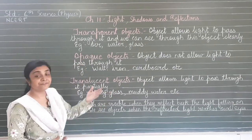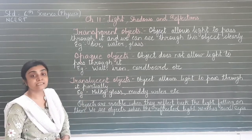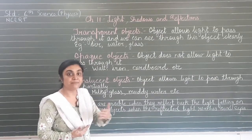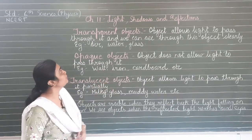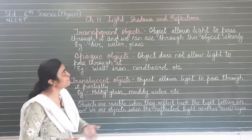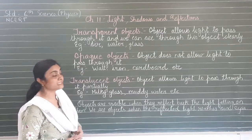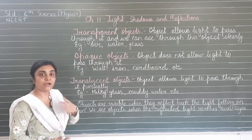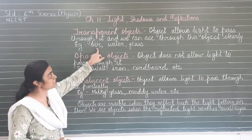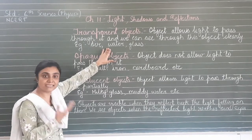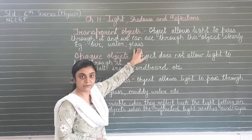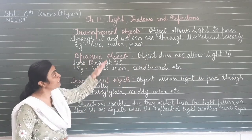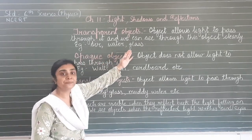Now let us see the different types of objects based upon light. First is transparent objects. Transparent objects allow light to pass through them completely, and we can see through them clearly. Examples are air, clean water, and glass - light passes completely through these objects and we can see clearly.